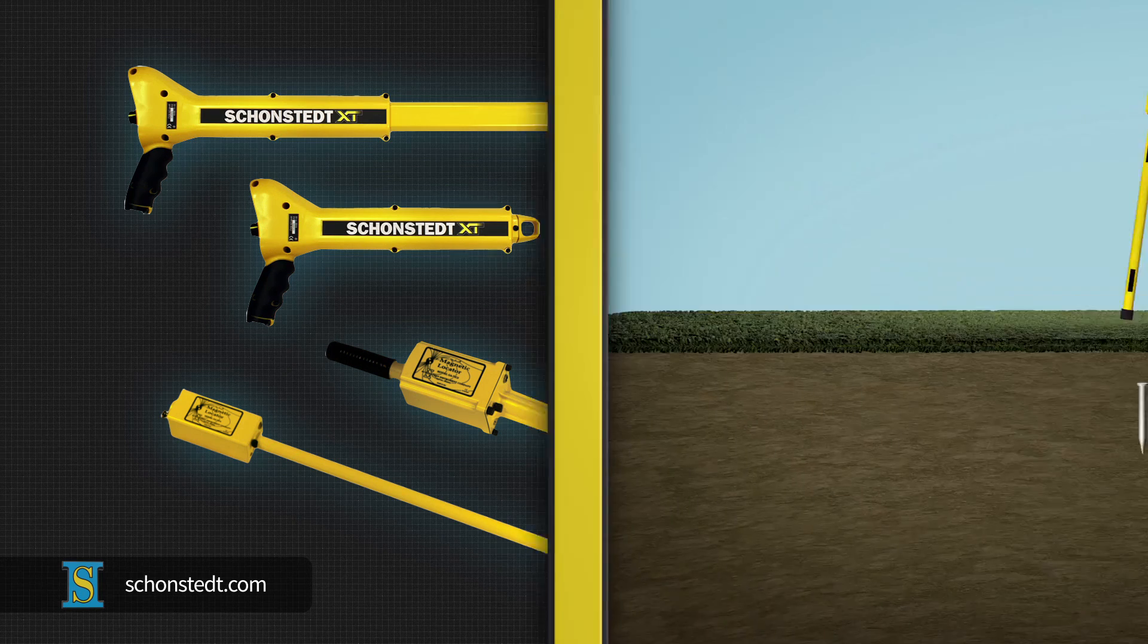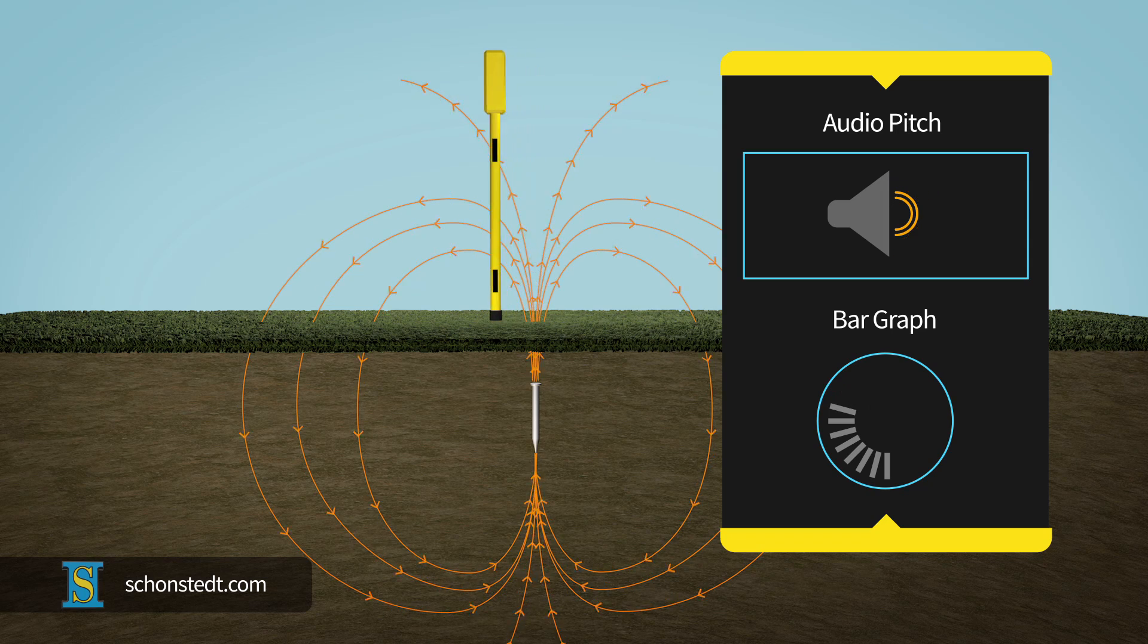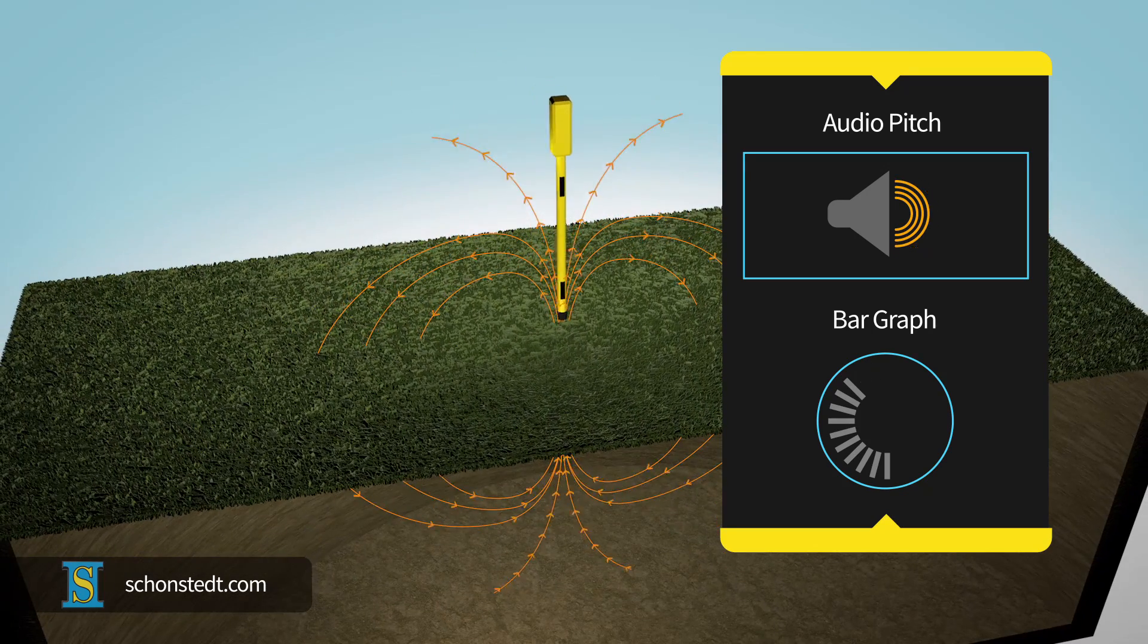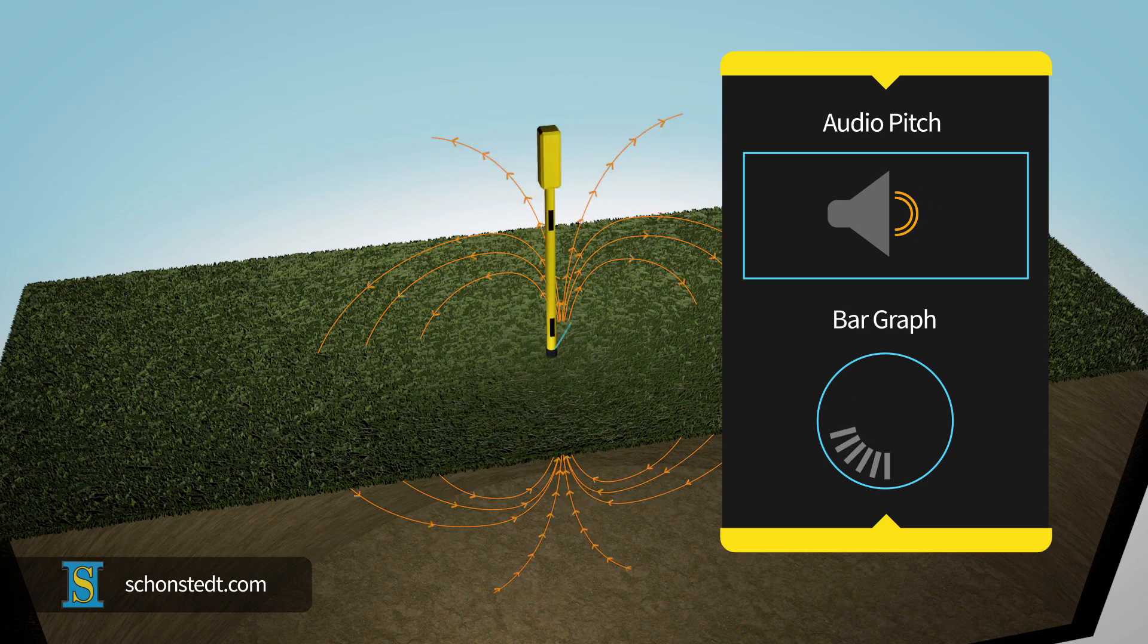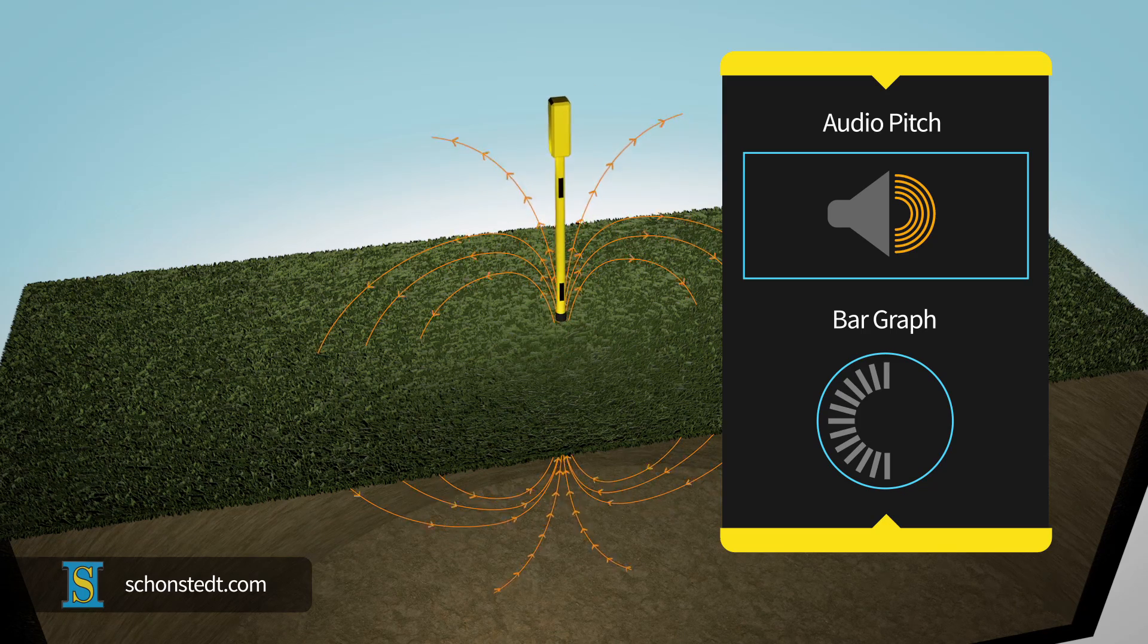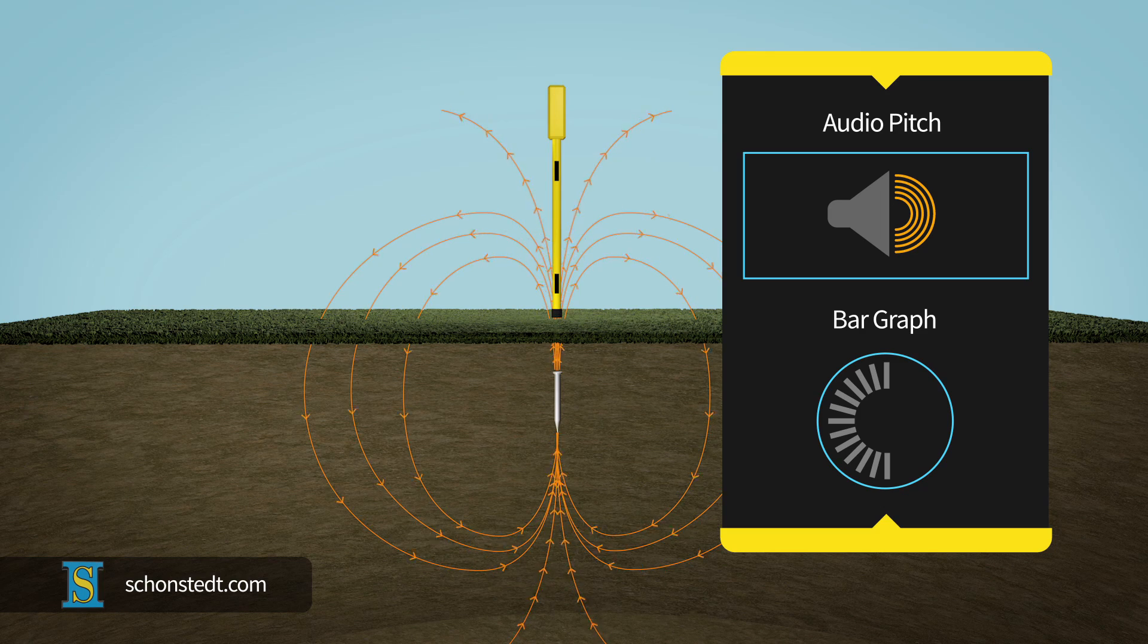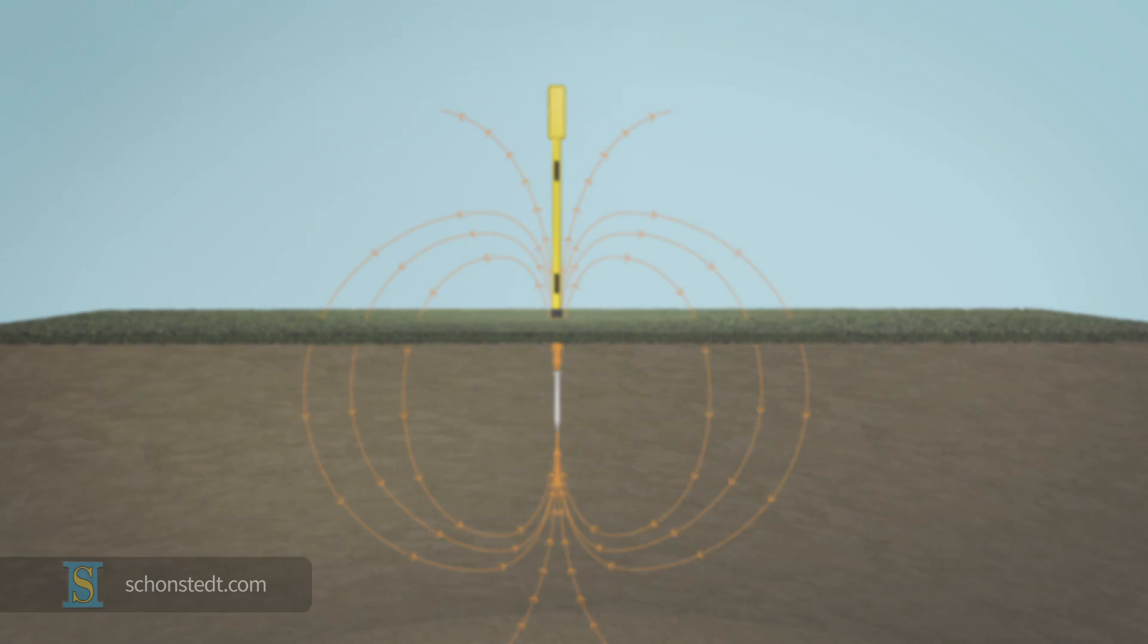The basic technique to locate a buried object with a magnetic locator involves approaching the object while listening to the pitch of the tone and, if applicable, watching the bar graph on the display. Once near the object, small X-pattern movements help pinpoint the exact location of the target. Volume and sensitivity can be adjusted on all Schoenstatt locators to accommodate various depths and sizes of targets, as well as background noise conditions.